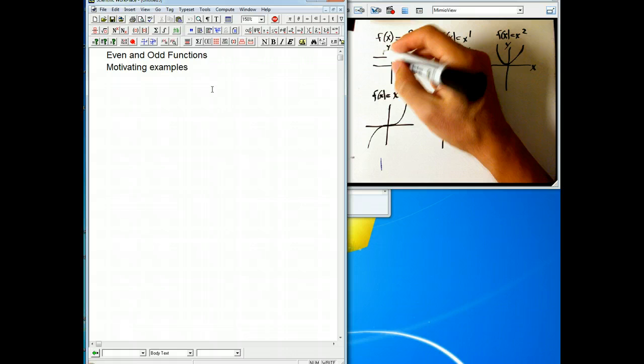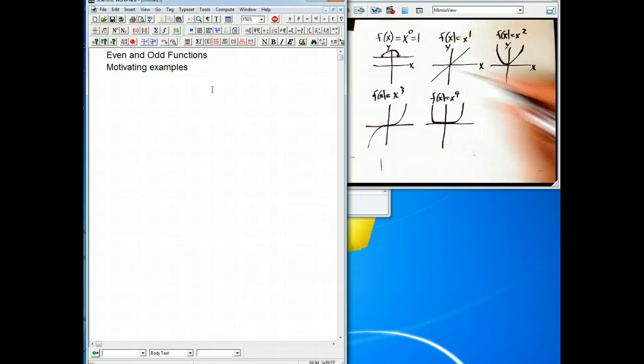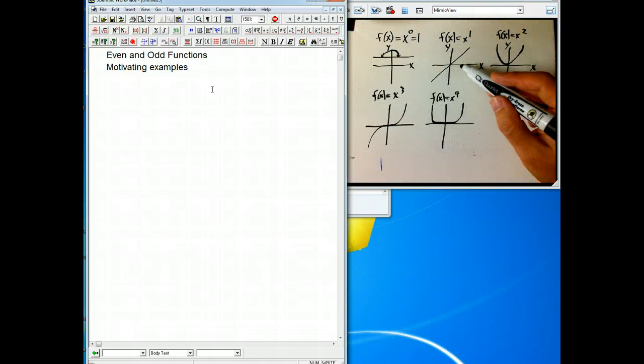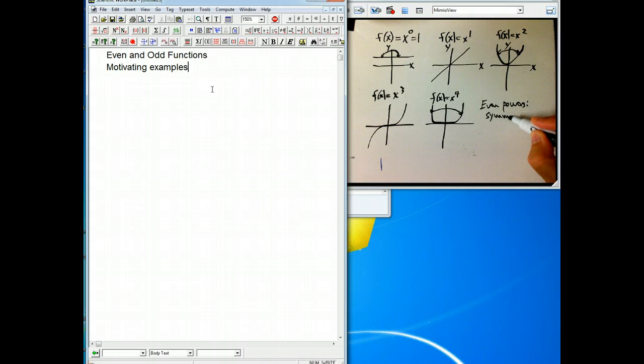This graph is symmetric about the y-axis. If I take a point here, it's symmetric across here. This is not symmetric about the y-axis, but this one is. The whole graph is symmetric about the y-axis. So it looks like our conjecture would be even powers symmetric about the y-axis.